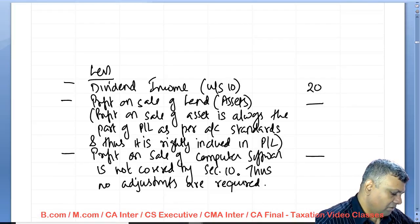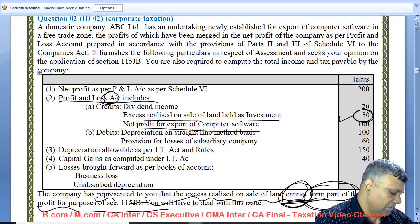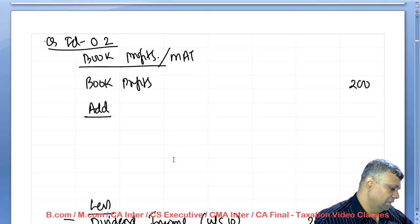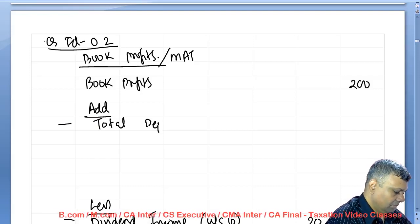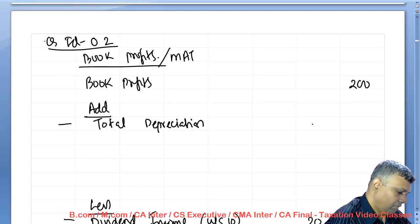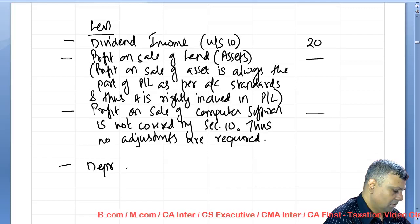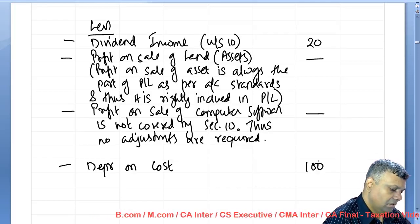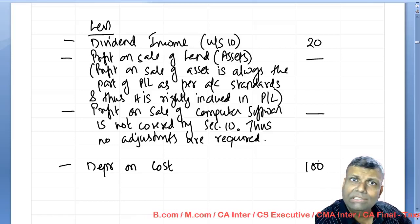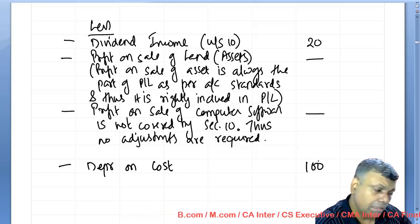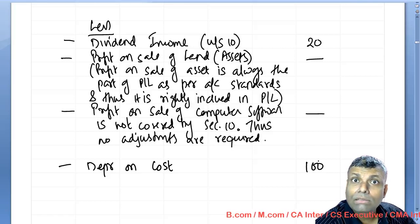For the debit side: depreciation — add total depreciation, then less depreciation on cost. Since there is no revaluation of assets in this question, all depreciation is on cost, so the add and less will cancel out, but both entries must be shown. Net profit on export of computer software: no adjustment in MAT because it is not covered by Section 10 — only incomes covered by Section 10 get adjustments in MAT provisions.